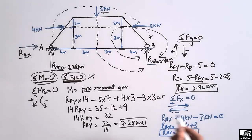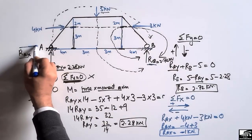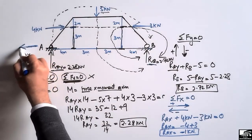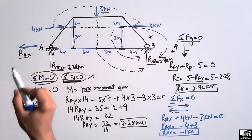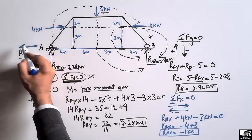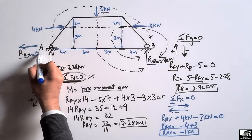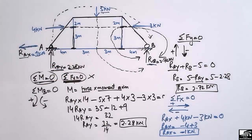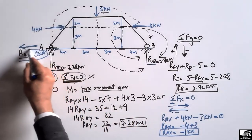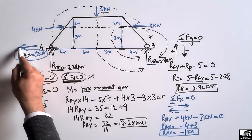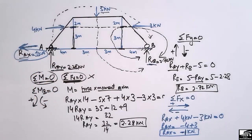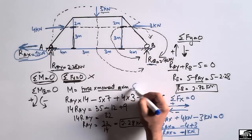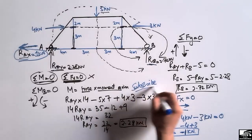The negative sign for R_AX shows that our assumed direction was wrong, so we invert the direction of this reaction. The corrected R_AX is 1 kN acting in the opposite direction. Hope you guys understand how to find out the support reactions for any frame. Don't forget to subscribe to our channel. Thank you for watching.